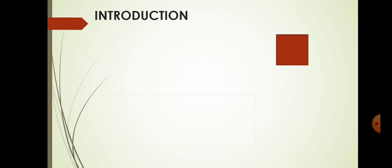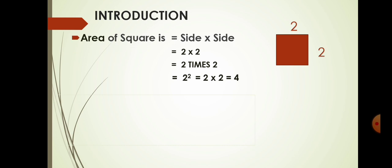Starting with the introduction, let us know about the square. In a square, all sides are equal — the length and breadth are equal. Suppose the measurement of each side is 2 centimeters. According to the area of the square, it is 2 into 2, meaning 2 is multiplied twice. So here we can write 2 to the power 2. The answer is 4, meaning 4 is equal to 2 squared.